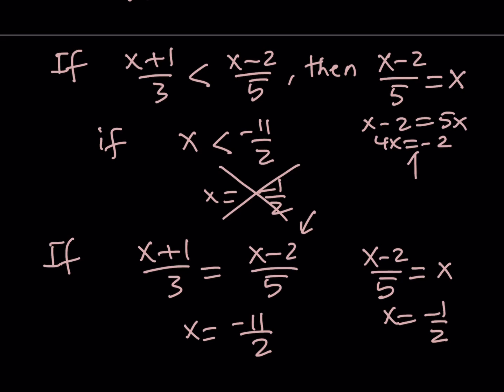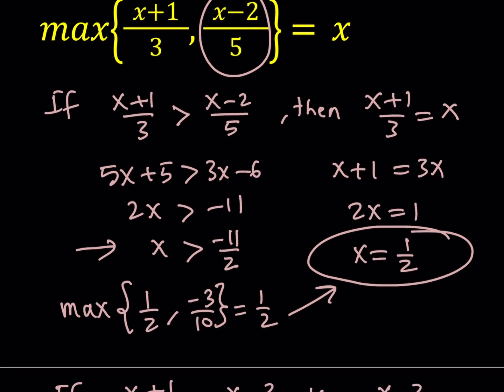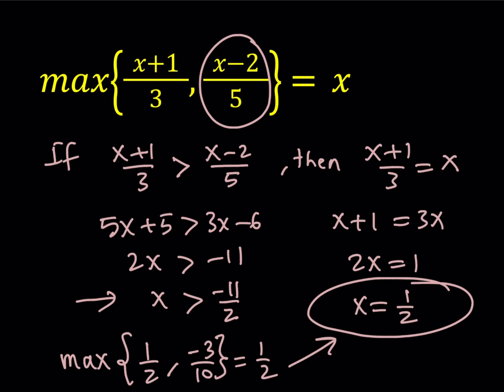But we know from there that x needs to be negative 1 half when, you know, just from the above. So it's not going to work. We're saying that if x is equal to negative 11 halves, then x needs to equal negative 1 half, which is a contradiction, obviously. So when they're equal, we don't really get any solutions from here either. So the only valid solution that we get for this equation is going to be x equals 1 half.